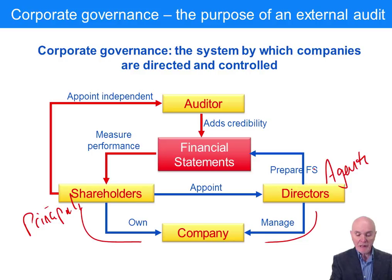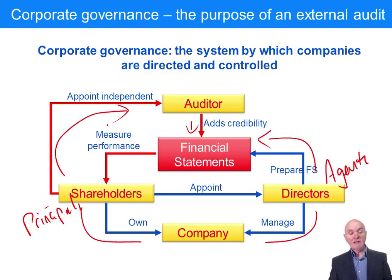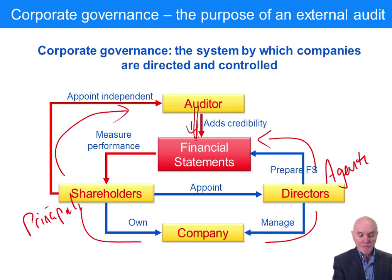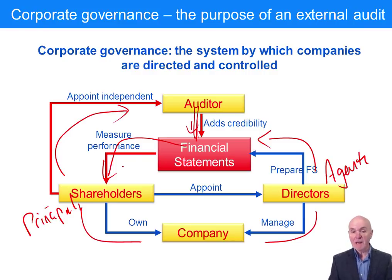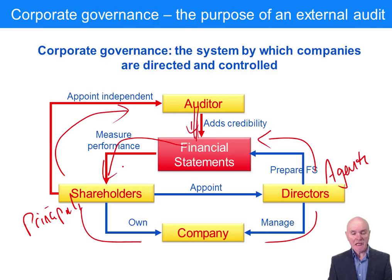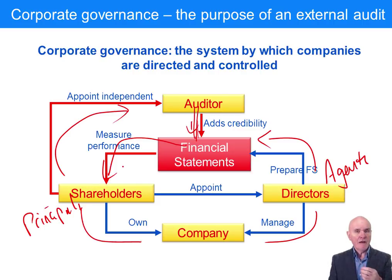Once a year the directors would prepare the financial statements, and the auditors — who are appointed by the shareholders — would audit them. The financial statements would then be presented to the shareholders at or shortly before the AGM. The trouble is, if you're only having one AGM and one set of financial statements, you could have 12 to 15 months between them, giving directors a huge amount of flexibility without much supervision or knowledge from the shareholders.